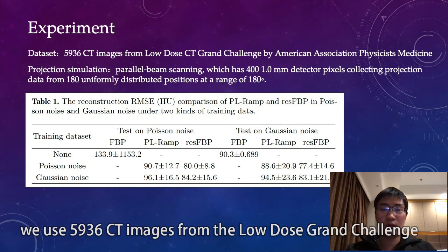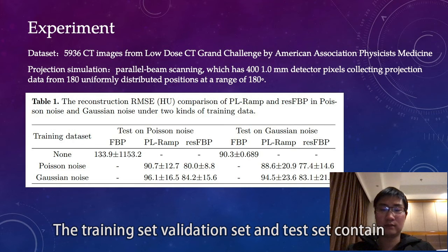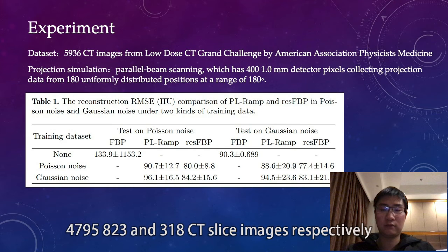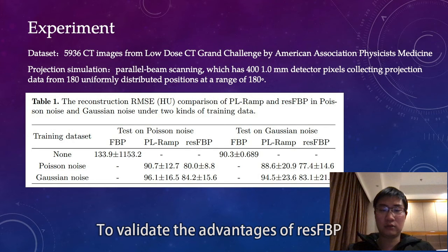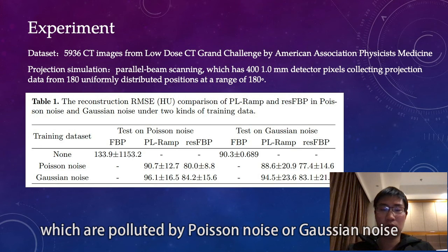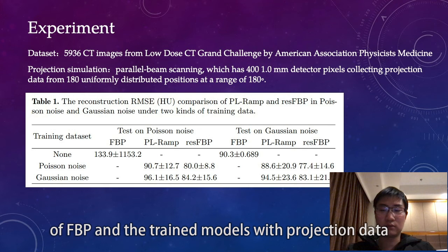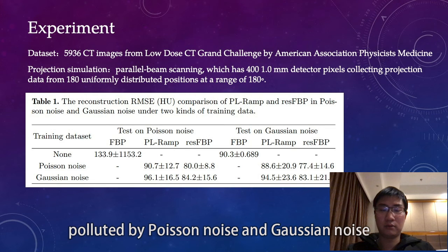In this paper, we used 5,936 CT images from the nodule challenge dataset and simulated the projection data with parallel beam scanning. The training set, validation set, and test set contain 4,795, 823, and 318 CT slice images respectively. To validate the advantages of ResT FBP, we train PL-Ramp and ResT FBP using two kinds of training datasets, which are corrupted by Poisson noise and Gaussian noise. Then we compare the reconstruction root mean square error of ResT FBP and the trained models with projection data corrupted by Poisson noise and Gaussian noise.